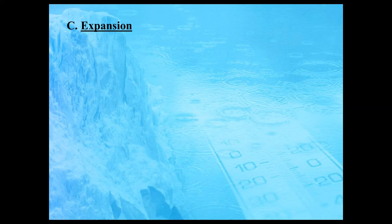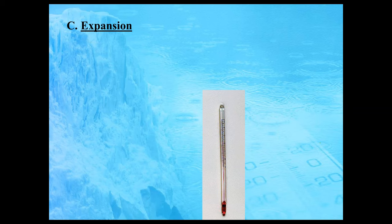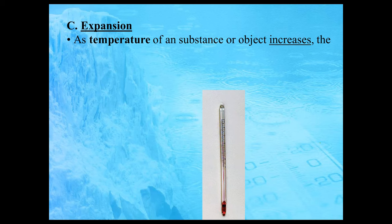Now, what we want to look at is the effect that heating or cooling an object or substance has on the amount of space it occupies. We'll break this into two categories: expansion and contraction. This is a regular lab thermometer, which typically has some colored alcohol in it. Expansion occurs when the temperature of a substance or object increases. What would happen if you actually took this thermometer and put it into a boiling hot beaker?